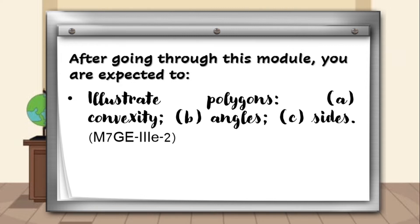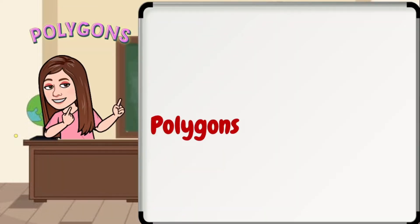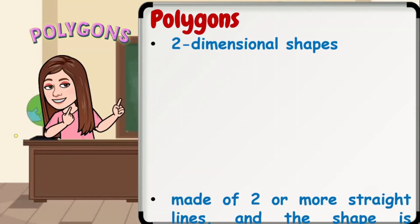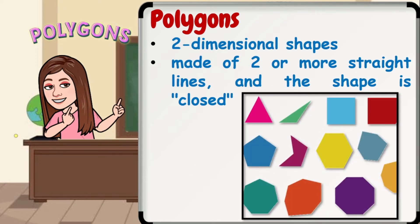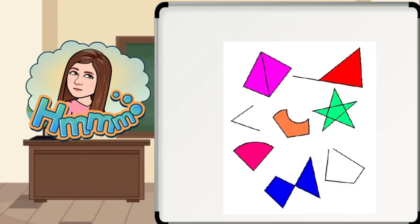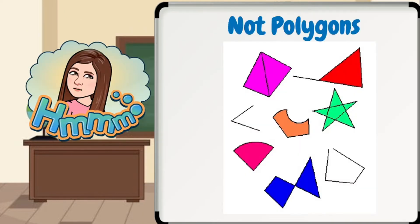Polygons are two-dimensional shapes. They are made of two or more straight lines and the shape is closed. The following are polygons, while the following are not polygons.